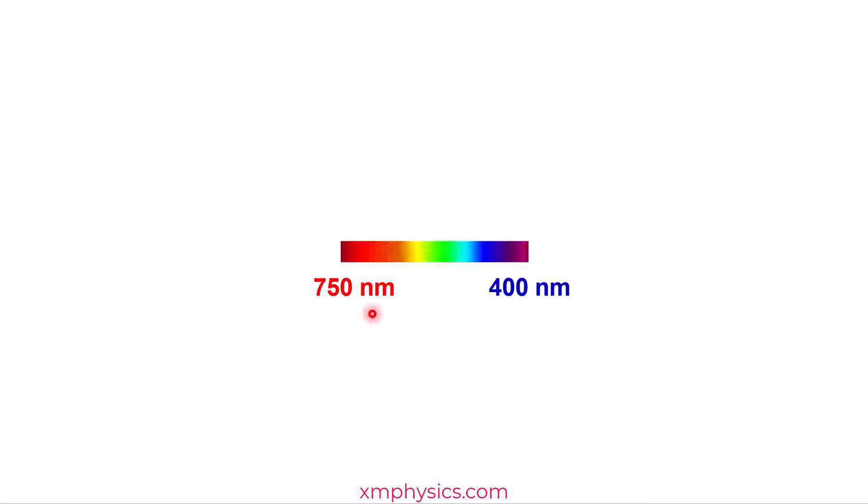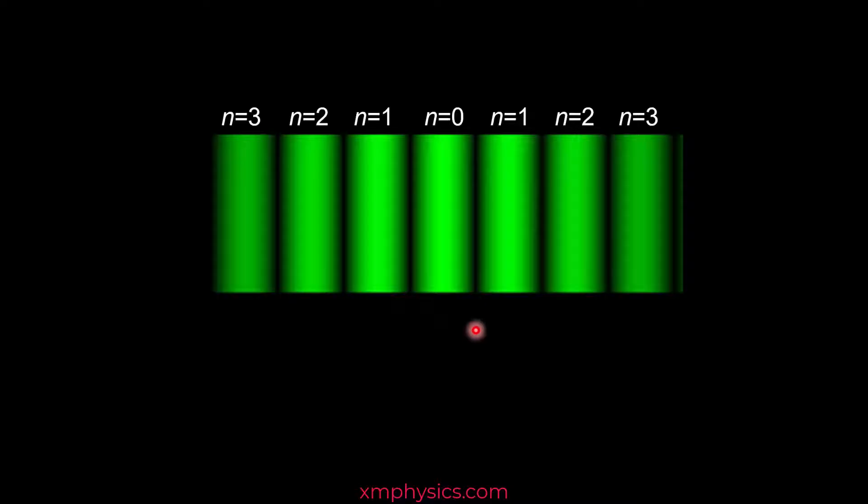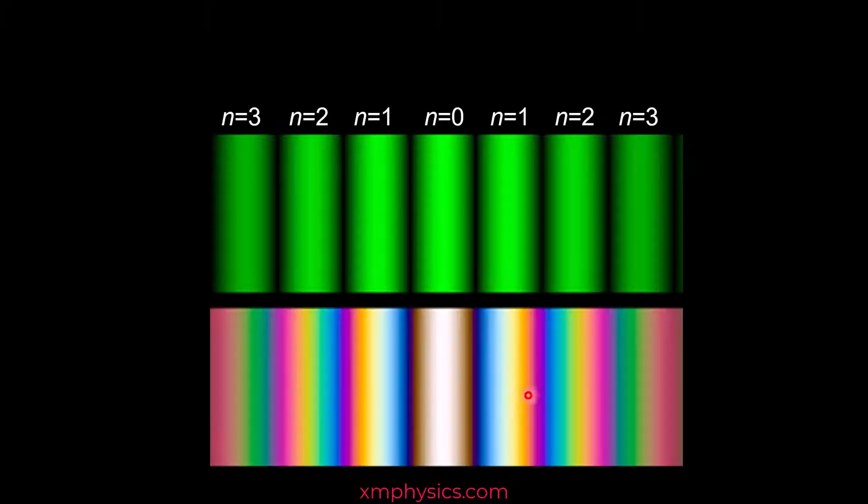Some books say 700 nanometers, some books say 750 nanometers, but that's not important. So let's say this is the interference pattern formed by monochromatic green light through a double slit. If we shine a beam of white light instead, we will see this interference pattern instead.